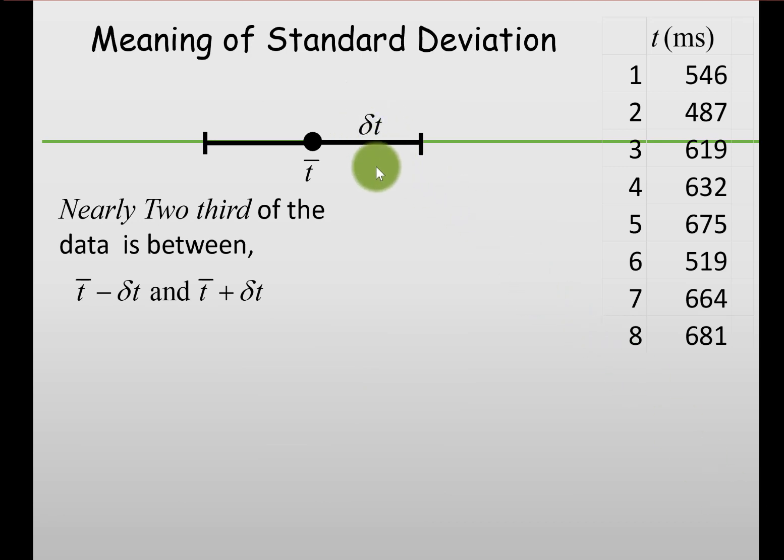Notice we are using δt to represent standard deviation. In this case we use δt̄ (delta t bar). Notice the difference to represent the uncertainty. We're not talking about uncertainty here, rather we are talking about standard deviation.